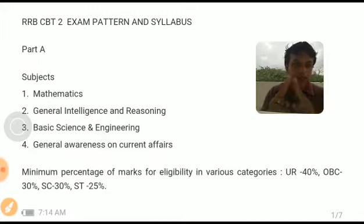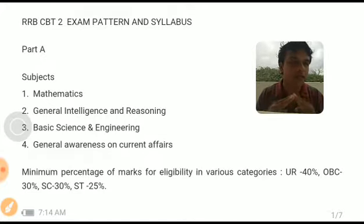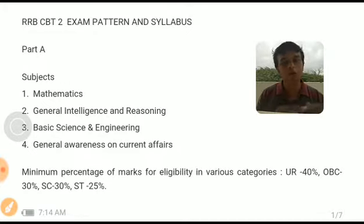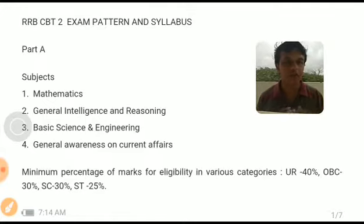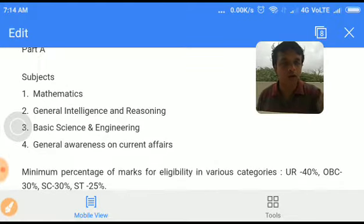There are two categories: one is assistant loco pilot and another one is technicians. There is no computer-based aptitude test after CBT2 for technicians — they can directly enter into the certificate verification process. Whereas candidates writing the examination as assistant loco pilot have to go for another test called computer-based aptitude test after clearing CBT2. After clearing the computer-based aptitude test they can enter into certificate verification. For candidates called for certificate verification, 70% of the marks is considered from CBT2 and 30% from the computer-based aptitude test, based on which the merit list is produced.